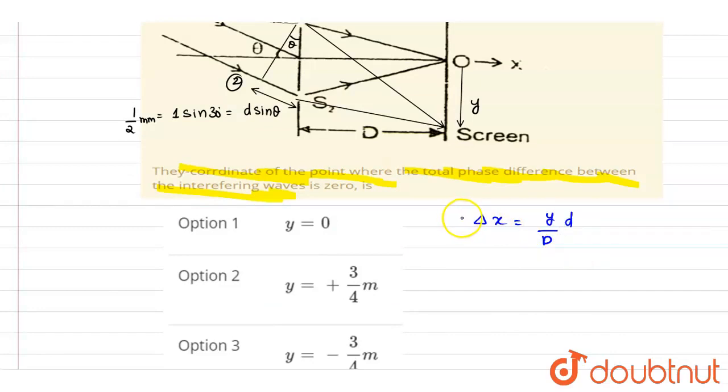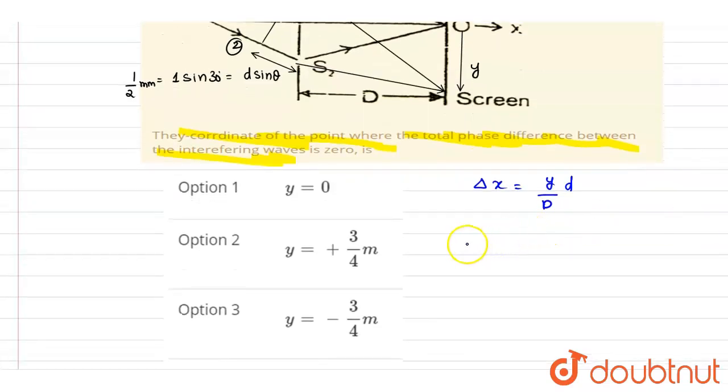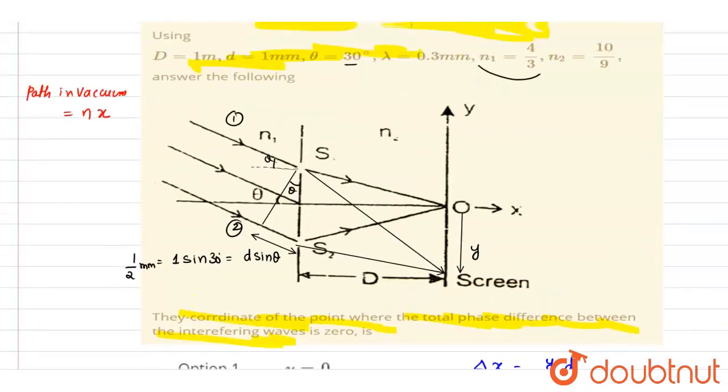And if you see, if you convert it into the vacuum, you have to multiply it with the medium refractive index. So I will write down the path difference that is getting created here. It is equals to N2 times of y d by capital D. N2 is already given, it is 10 by 9.